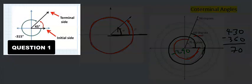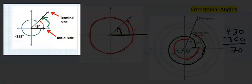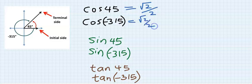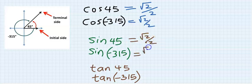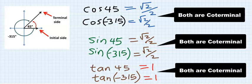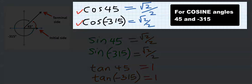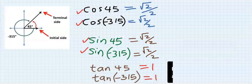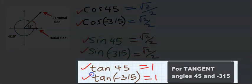Now let's check if the coterminal angle of 45 degrees is the same as minus 315 degrees. This gives root 2 over 2, and this gives root 2 over 2 — the same answer. This gives 1 and this gives 1. You can see that the coterminal angle of 45 degrees is the same as minus 315.